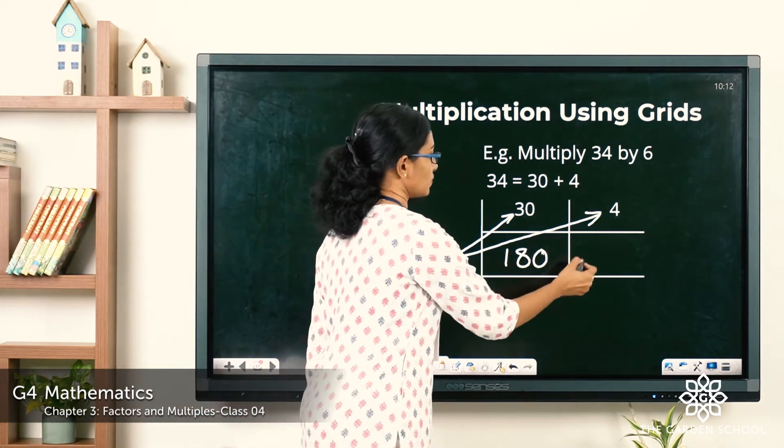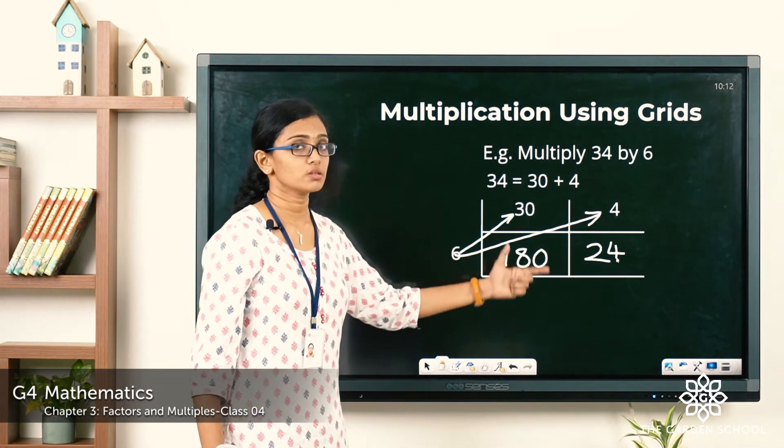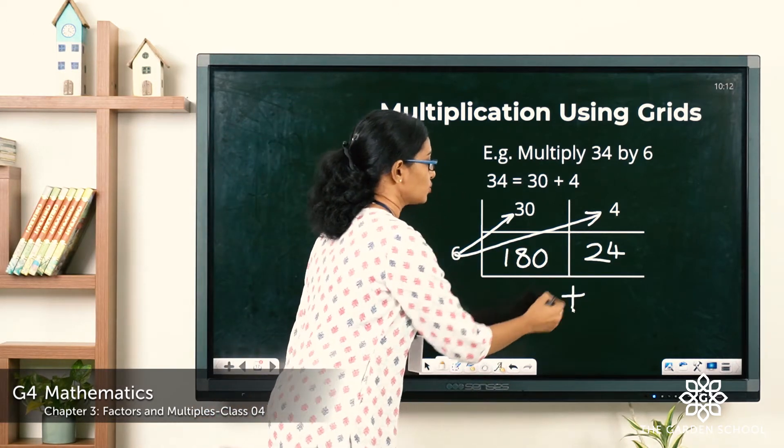Now 6 into 4, what is it? 24. So we have two products here. How do we get the final product? We are going to add these two products.